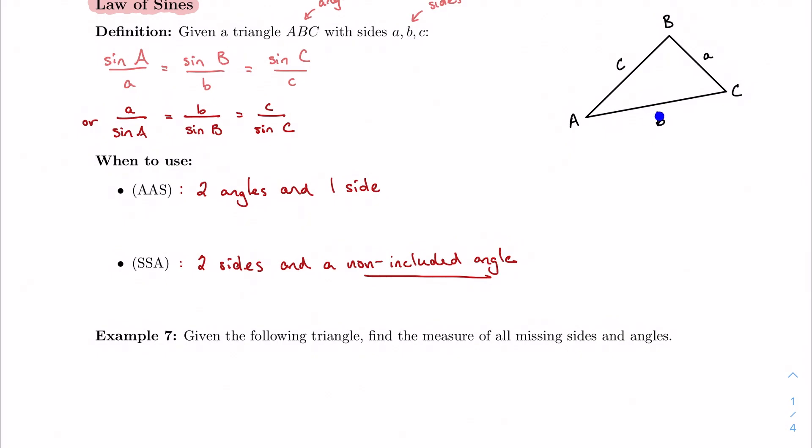So I can't use the law of sines in that case, because I don't have enough information. But if I was given, like, B, C, and C, or B, C, and B, then that would be a case where I could use my law of sines.